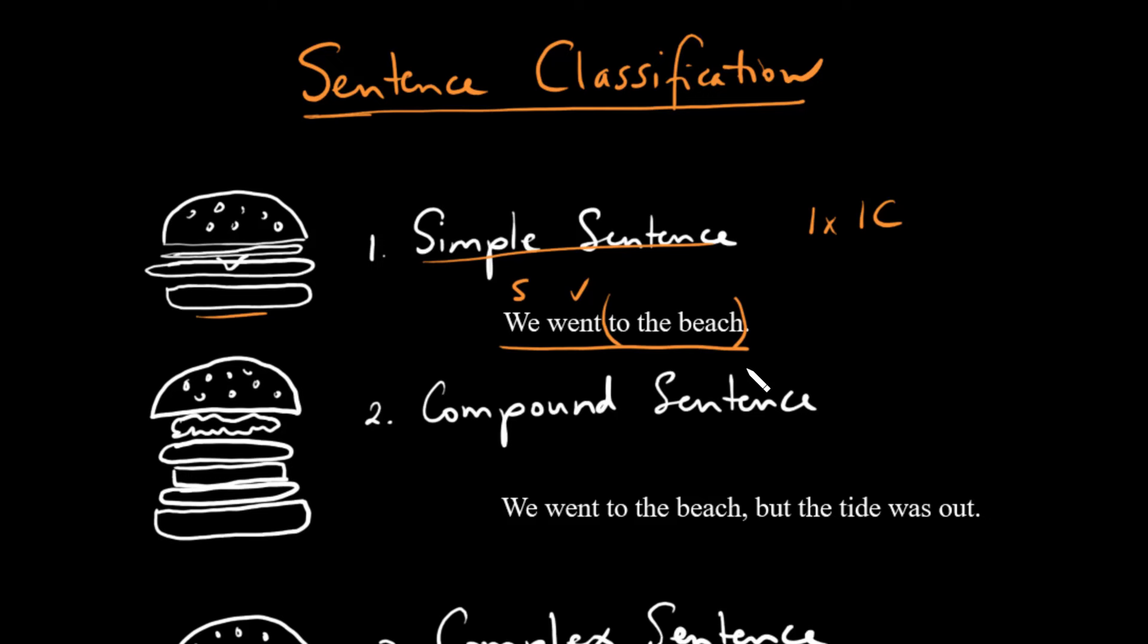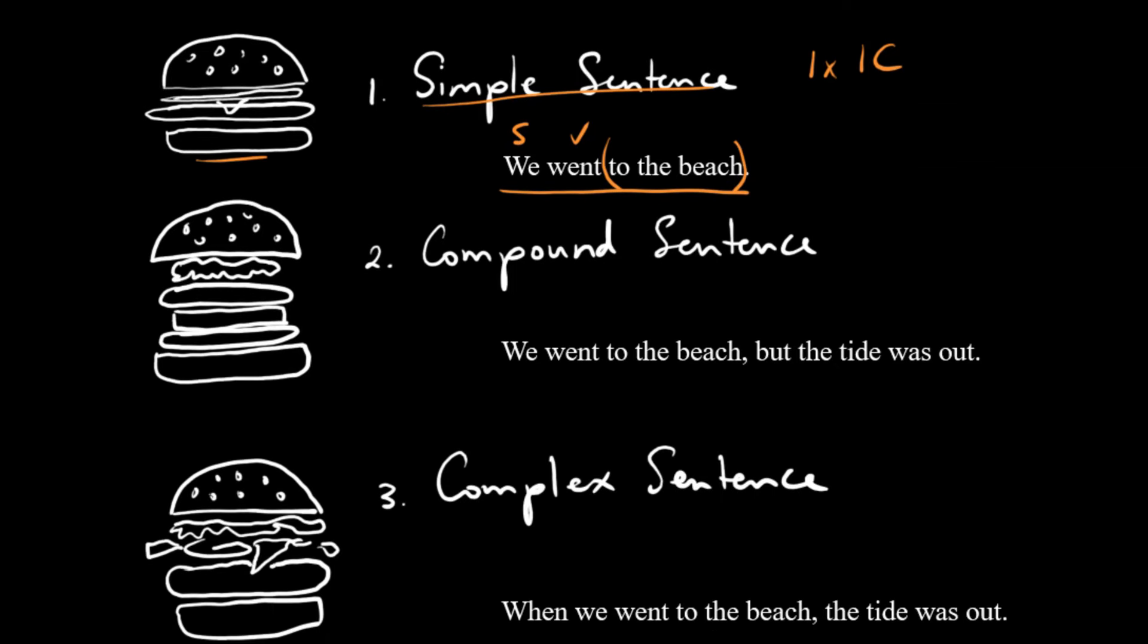Then we're going to get to our second pattern here, and you can think of this as similar to something like a Big Mac. So you just double the patties. You have two patties in this case, and what we have here is we have two times an independent clause. So two times an independent clause.